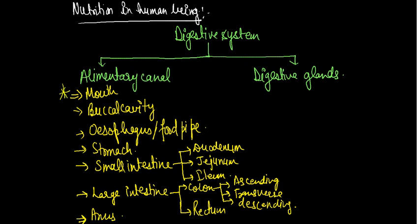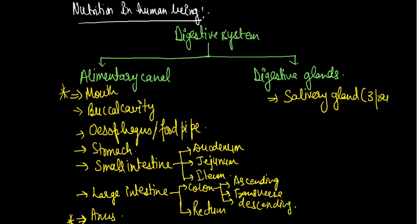Now coming to the digestive glands — number one is the salivary gland. Three pairs of salivary glands are present in our body.